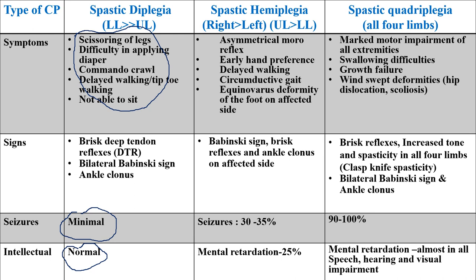In spastic hemiplegia, it is commonly present on the right side. Weakness is more in the upper limb compared to the lower limb. In infants, there will be asymmetrical Moro reflex and early hand preference even before one year of age. Delayed walking will be present, along with circumductive gait due to hemiplegia, equinovarus deformity of the foot on the affected side, and Babinski sign with brisk reflexes and ankle clonus on the affected side only. Seizures develop in 30–35% of cases, mainly partial, and mental retardation is present in around 25% of cases.